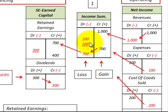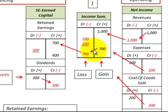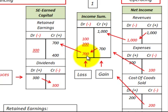So we get a net amount in the income summary account — in this case $1,000 minus $300 — so our net amount is $700, which happens to be a gain. Then we close that gain into retained earnings. A gain would increase retained earnings, so we'd credit retained earnings. If the income summary was a loss, we would decrease or debit retained earnings.